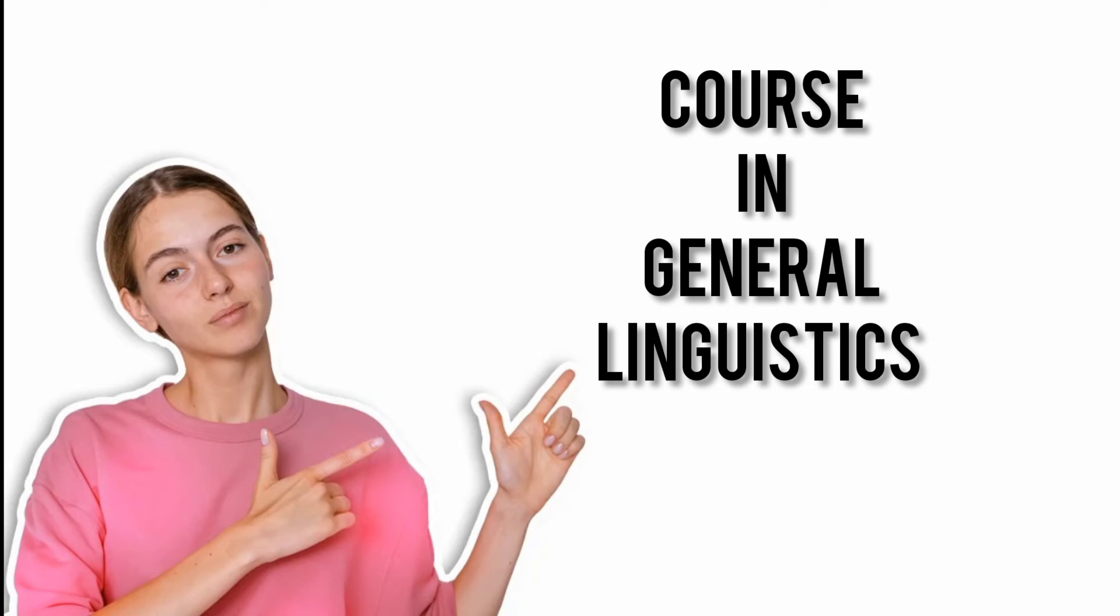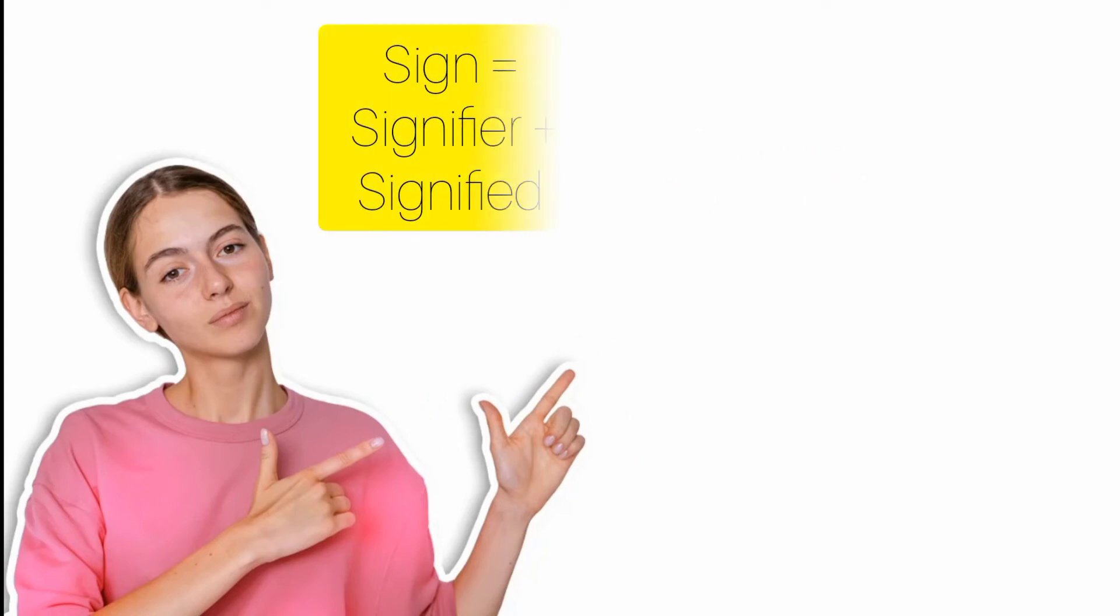They published his notes and wrote a book called Course in General Linguistics. Now, if we talk about four postulates in the field of structuralism, the first postulate was sign—that means every sign has a signifier and signified. The second postulate was parole and langue. I have made a video and you can see it in the description box.